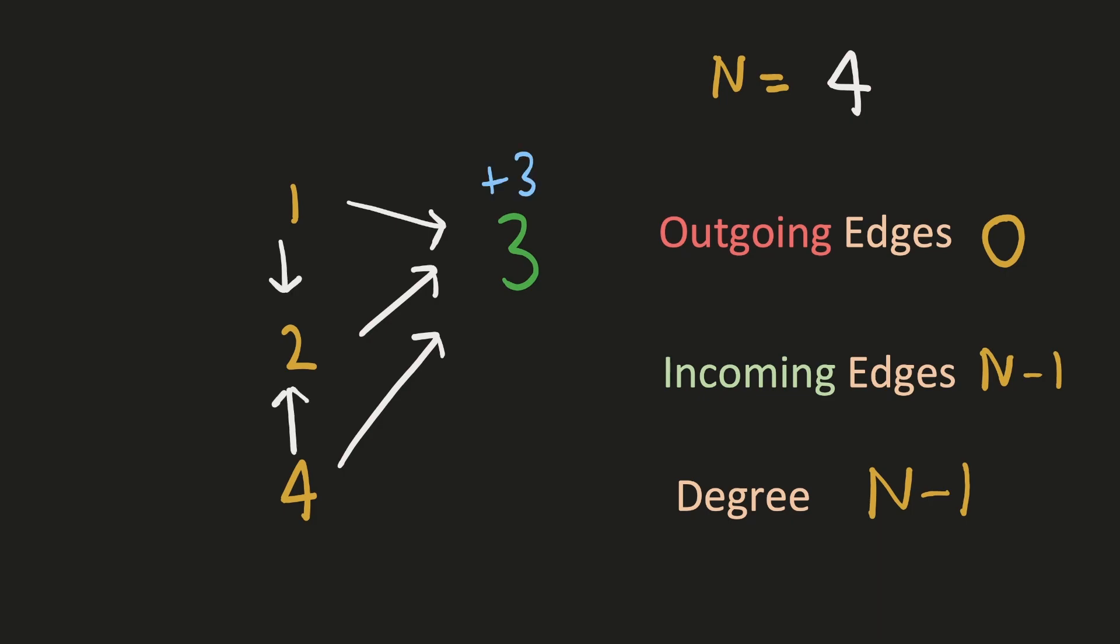We can check that even for a different arrangement in the graph, the degree of only the judge can be n-1. For example, person 1 has two outgoing edges so its degree will be -2. Person 2 has two incoming edges and one outgoing edge so its degree will be +1. Similarly the degree of person 4 will be -2. So if we have a person with degree as n-1, that will be the town judge.